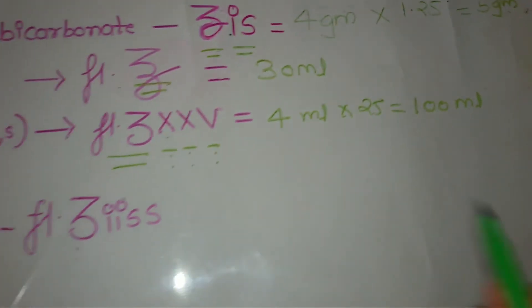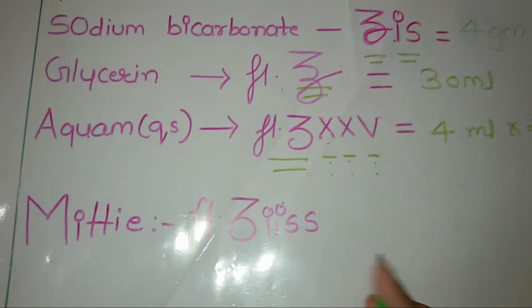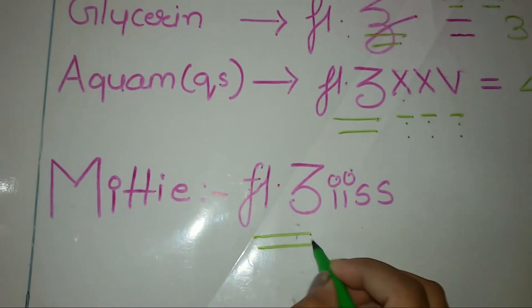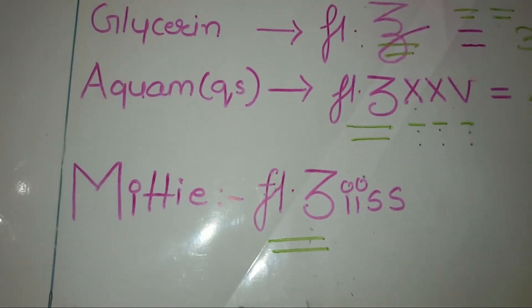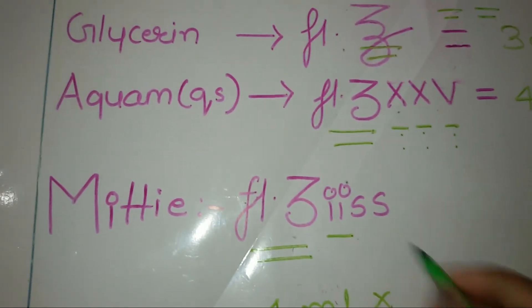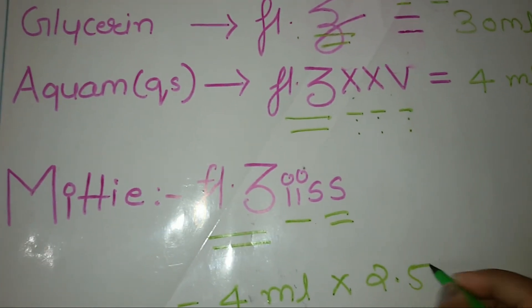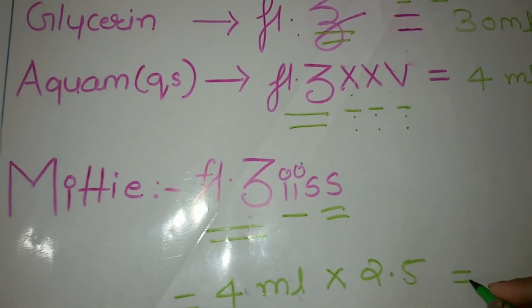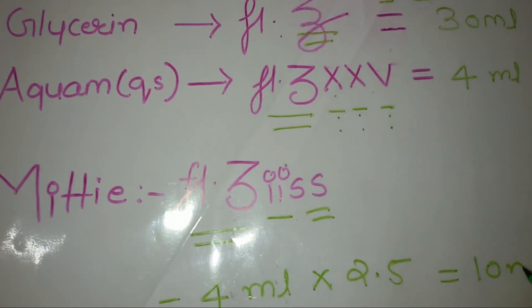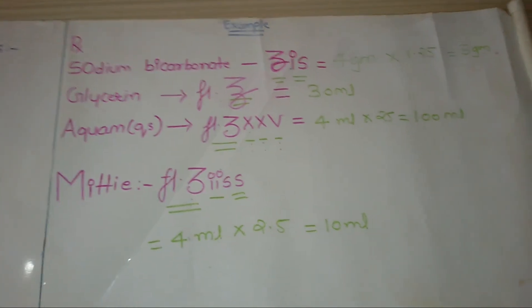Your 5 gram solution. Another is fluid drachm equals 4 ml into 2 point SS. That equals 2.5, so it is 10 ml. So this is about how to solve the prescription.